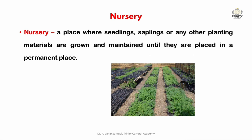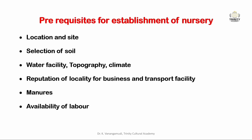First, we'll see what a nursery is. It is an area or place where seedlings, saplings, or other planting materials are grown and maintained until they are transplanted in a main field or permanent place. In other words, a place where prototype plants are produced by gaining technical skill, maintaining properly, and by careful planning.